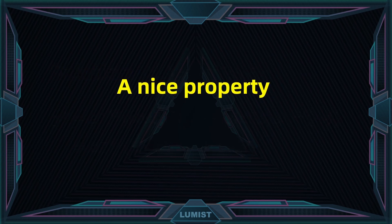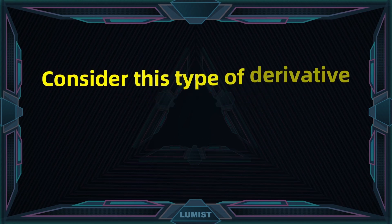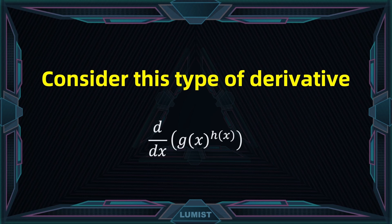Now let's discuss something special. From the definition of exponential and logarithmic functions, we have the property that x always equals e to the power of ln of x. Whenever you see e to the power of ln of x, it always gives you x itself. We can use this property to find the derivative of functions in the form of g(x) to the power of h(x) — a function to the power of another function.